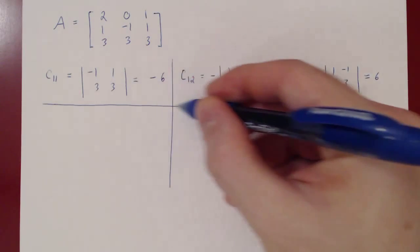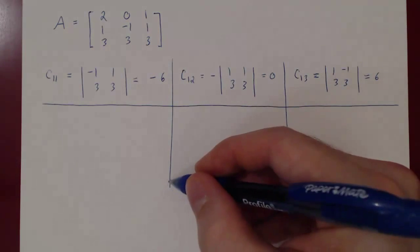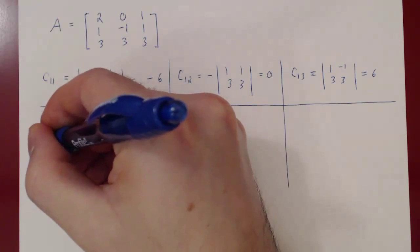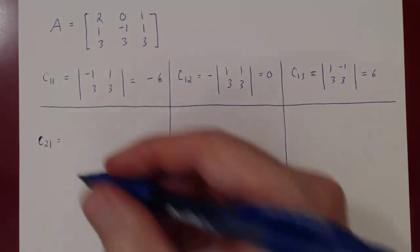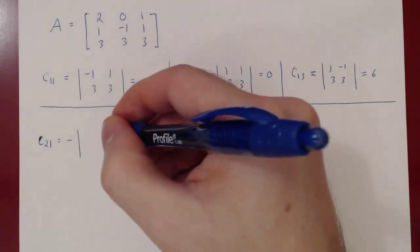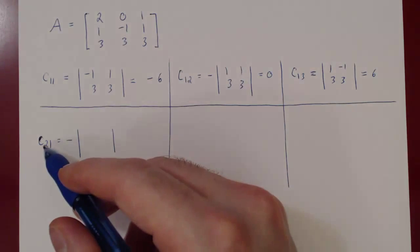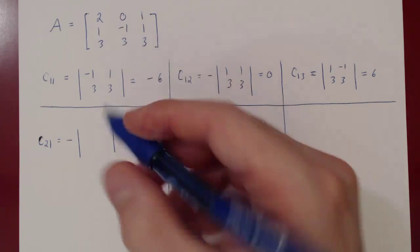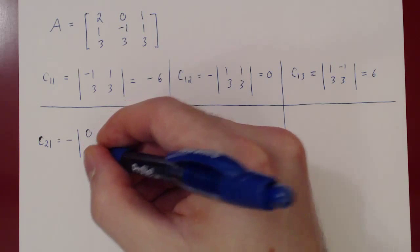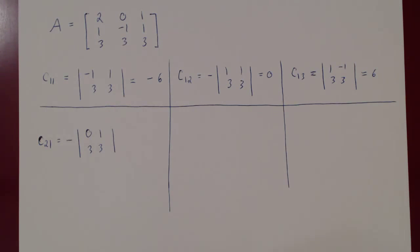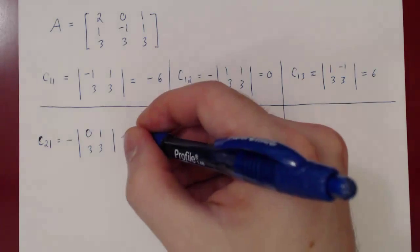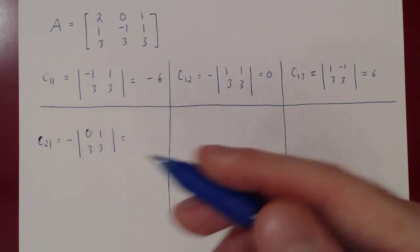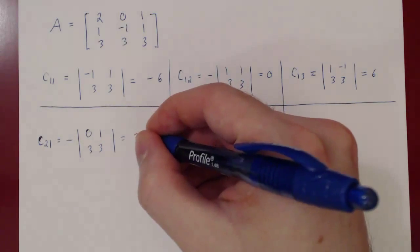Now let's find the cofactors for the second row. C21: 2 plus 1 is 3, which is odd, so we get a negative. The determinant after we delete row 2, column 1, gives the matrix 0, 1, 3, 3. The determinant will be 0 minus 3, so negative 3 for the matrix, and the negative of that gives us positive 3.